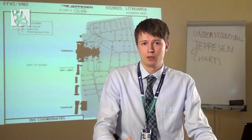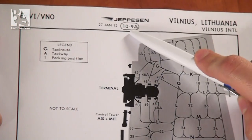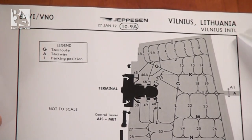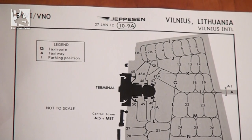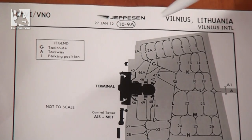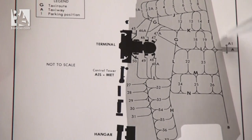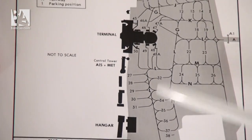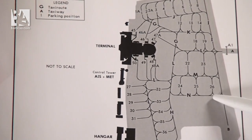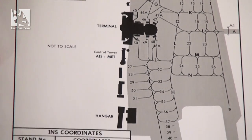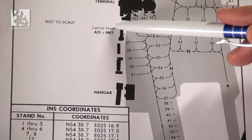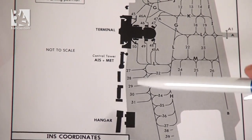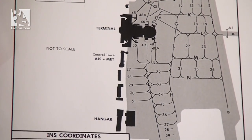Now let's go to the next chart, 10-9A, published 2012 January 27th for Vilnius International — this is the ground and terminal chart. Here you can see the whole terminal area with all the stands and taxiways, for example stand 50, 49, 48, and taxiways Lima, Mike, November and so on. It also shows the terminal itself, the control tower with all the airdrome information service and meteo, some hangars, and notes that the chart is not to scale.